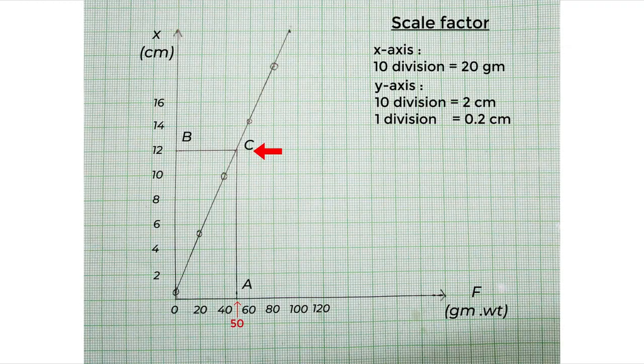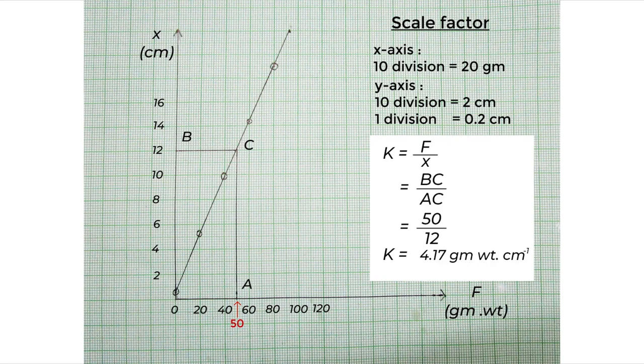I have taken a point C on the straight line. The slope of the straight line is the spring constant. Therefore, spring constant k equals BC by AC, which is 50 by 12, or k equals 4.17 gram weight per centimeter.